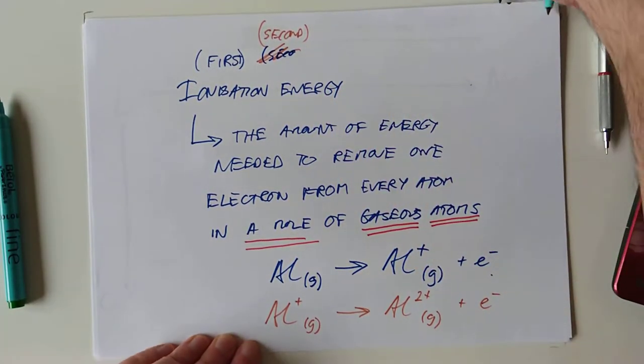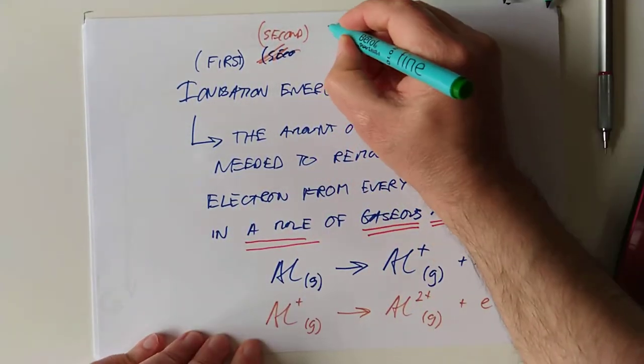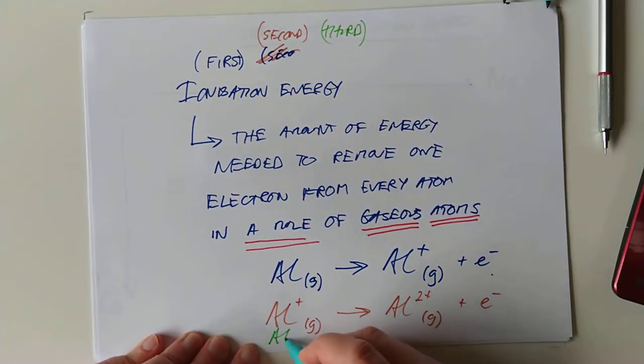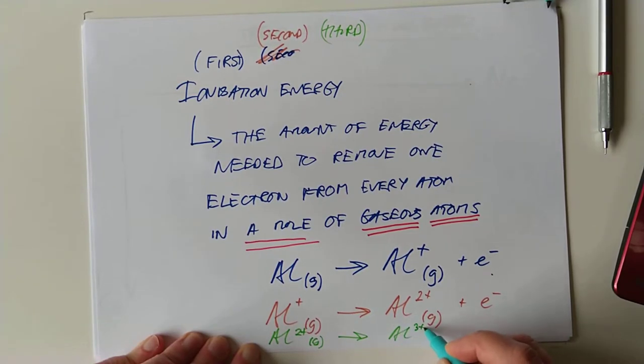And, of course, I'm sure you can work out, there's also the third ionization energy, which we take Al2+ and turn it into Al3+.